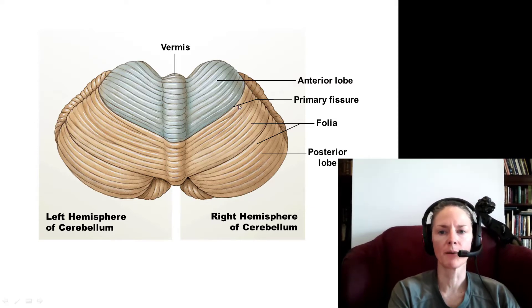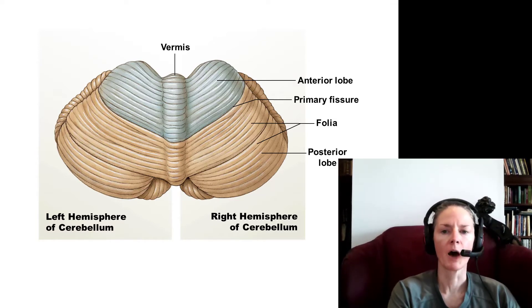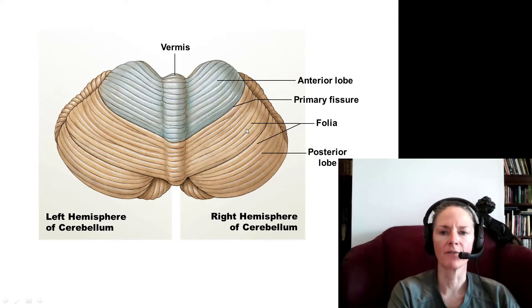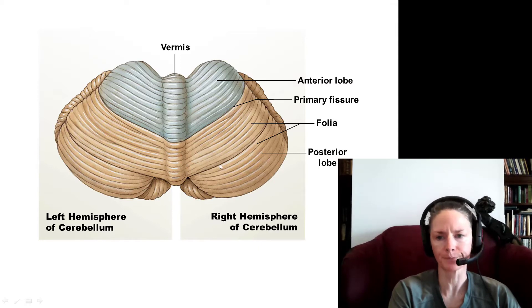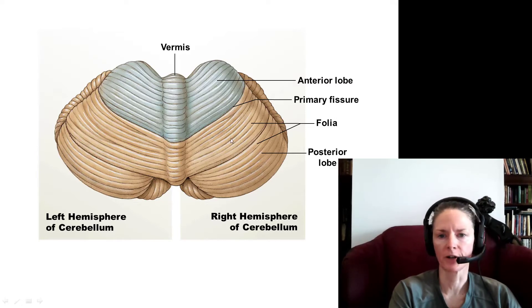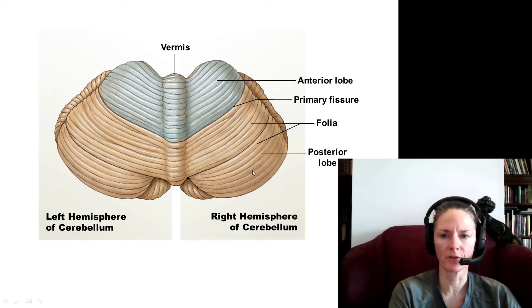The cerebellum is covered with a gray matter cortex, just as the cerebrum is. However, in the case of the cerebellum, we have a different type of infolding. We have these long thin infoldings called folia, which means leaves. Think of sheets of paper or leaves of paper in a book — it kind of looks like pages in a book. These are our ways to increase surface area, so these are the cortical infoldings on the cerebellar surface, the folia.